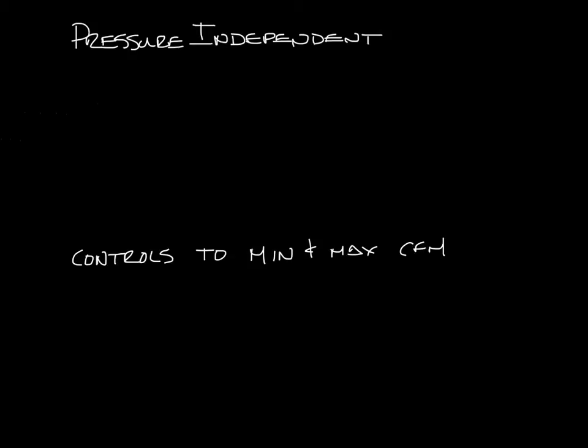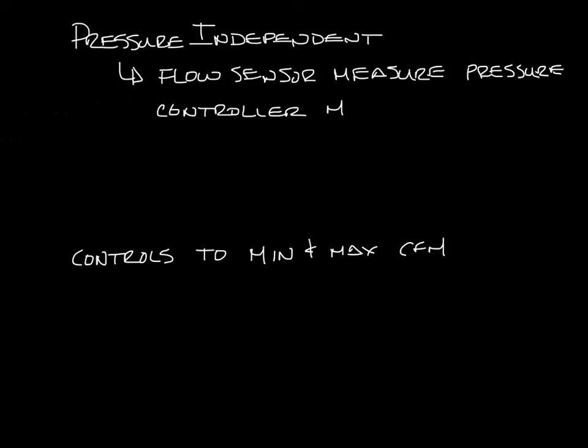I'll put a link to the pressure independent podcast in the notes if you need a full explanation, but here's a quick refresher. A pressure independent VAV box has a flow sensor that measures the pressure in the box and allows the controller to modulate the damper to compensate for changes in the pressure in the system.